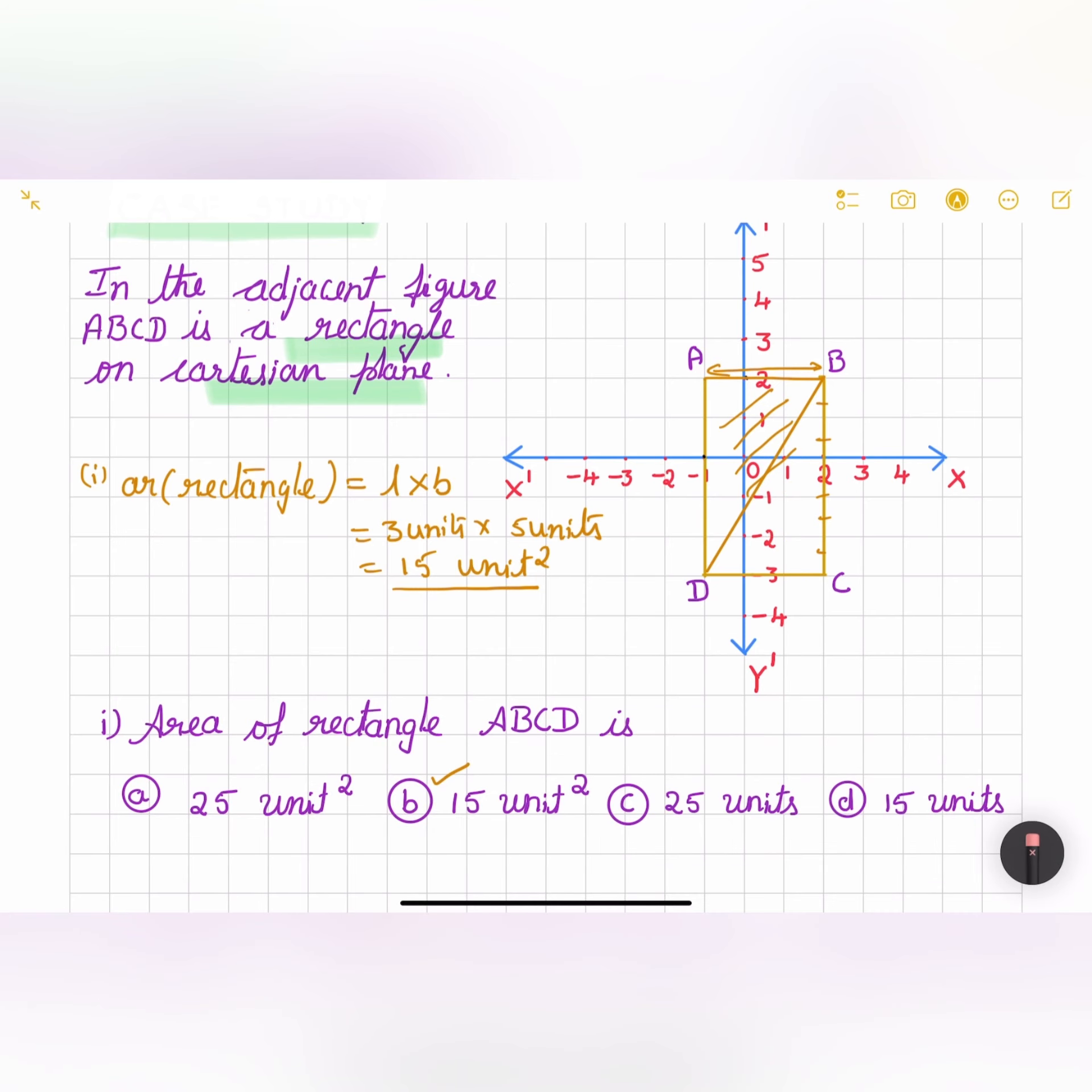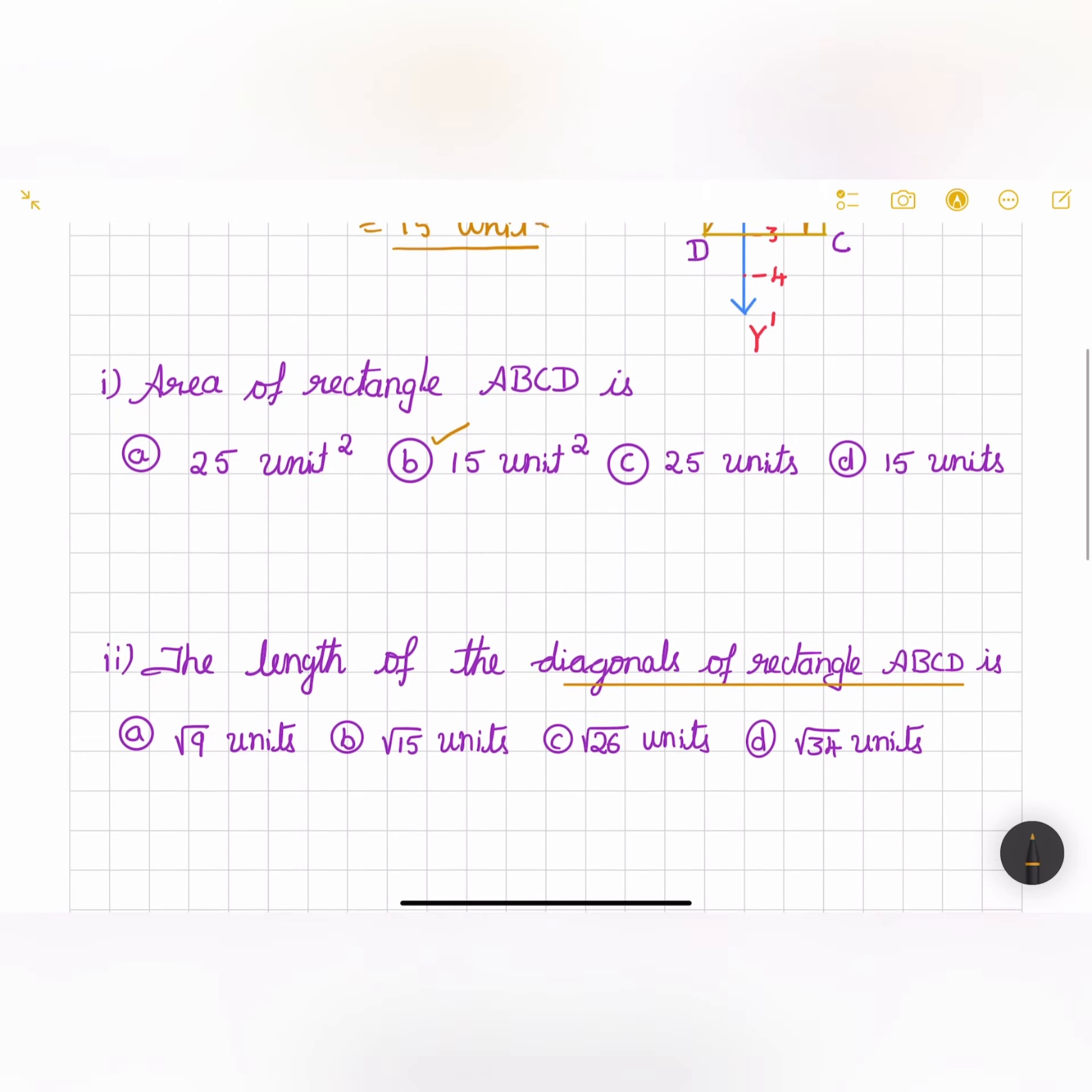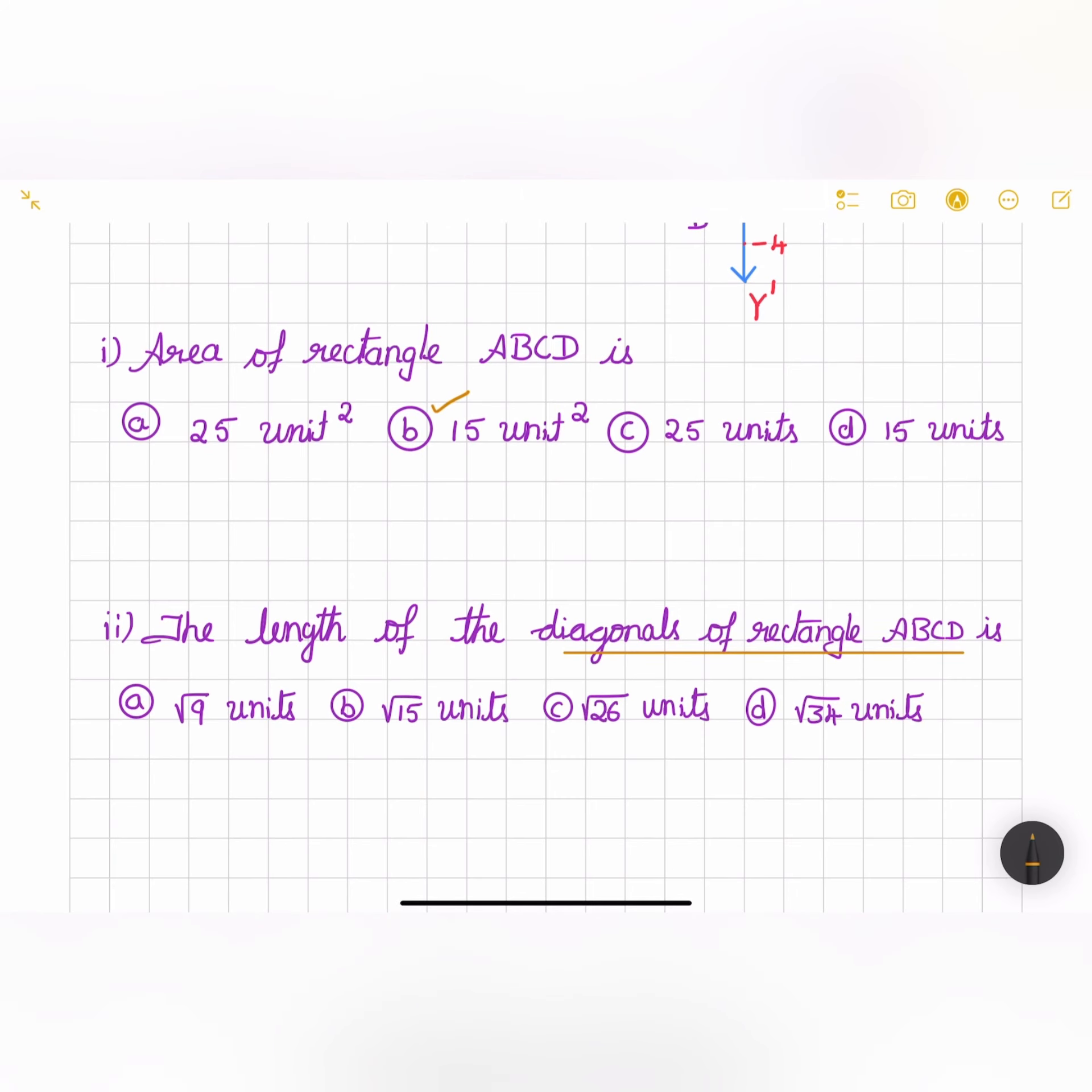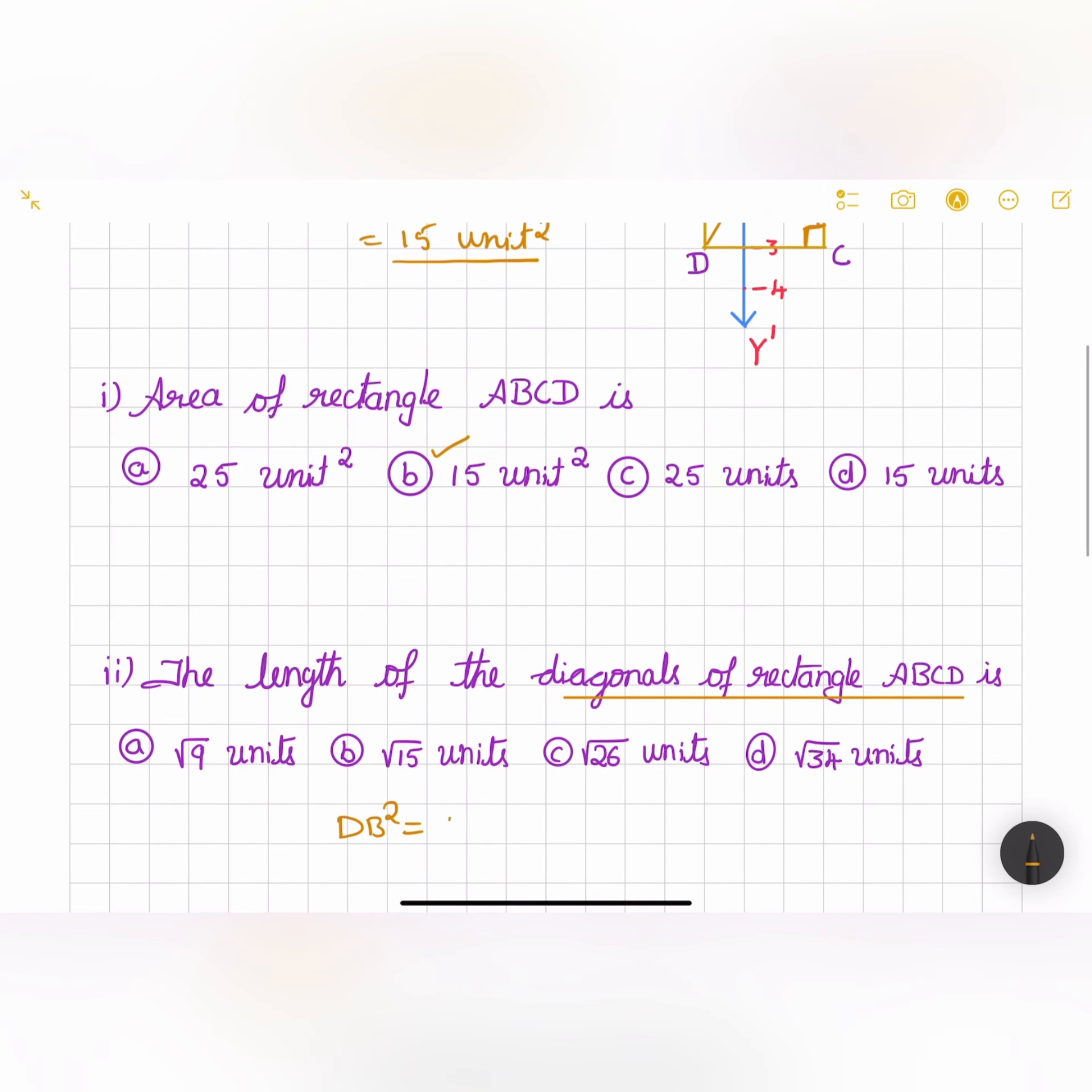We know that we can apply Pythagoras theorem here. This will be equal to 90 degrees. This angle, angle C, will be equal to 90 degrees. And DB will be the hypotenuse. So we can apply the Pythagoras formula. DB squared is equal to BC squared plus DC squared.